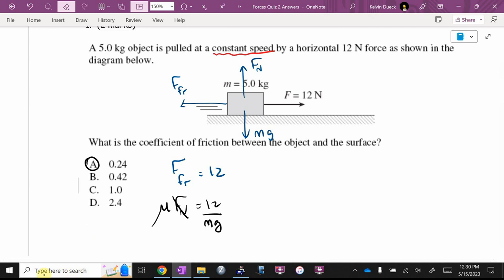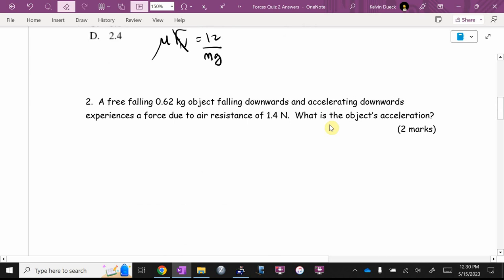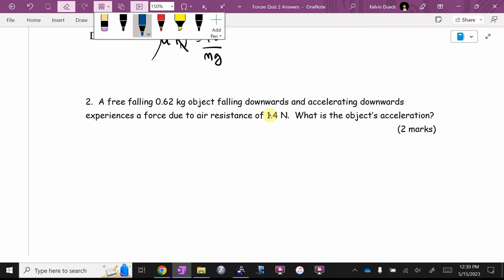Number two, a free falling object falling downwards and accelerating downwards experiences a force of air resistance. What's the acceleration? This is a job for a free body diagram. Dina, how do I know? They gave me air resistance. That's one force. And I know the obvious one, Mg. If there's more than one force, you'll rarely be wrong to do a free body diagram. What are the forces acting on it? Get the obvious one. Gravity. What else? Air resistance.